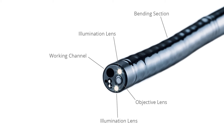The working channel is a lumen that allows endoscopic instruments to be inserted through the endoscope to perform procedures such as fine needle aspiration, FNA, drainage, injection, laser ablation, radio frequency ablation, biopsy, polypectomy, and electrosurgical coagulation and cutting. The gas, fluid, and suction nozzle lumen allows insufflation, irrigation, and suction to optimize access and visibility within the GI tract.